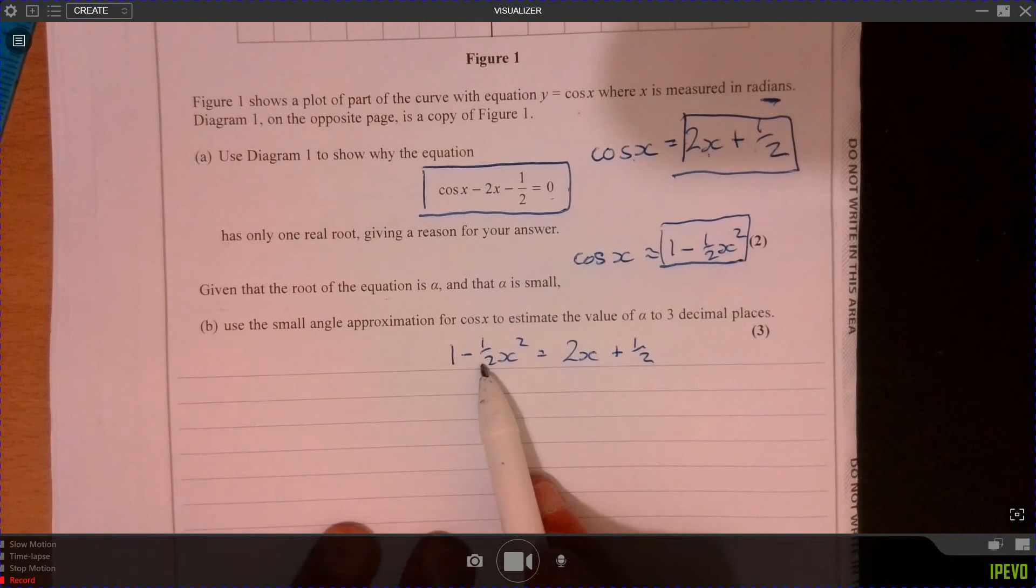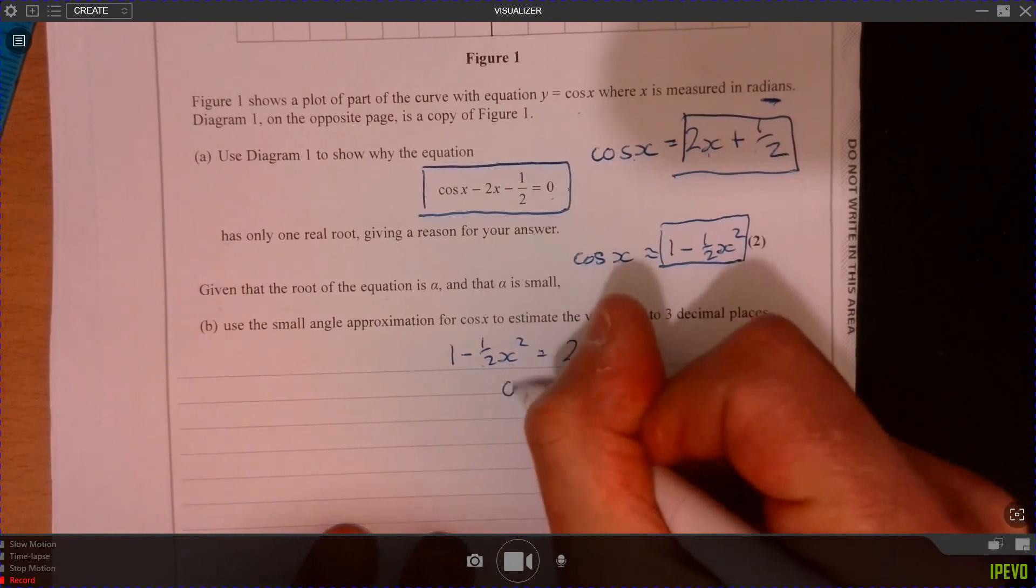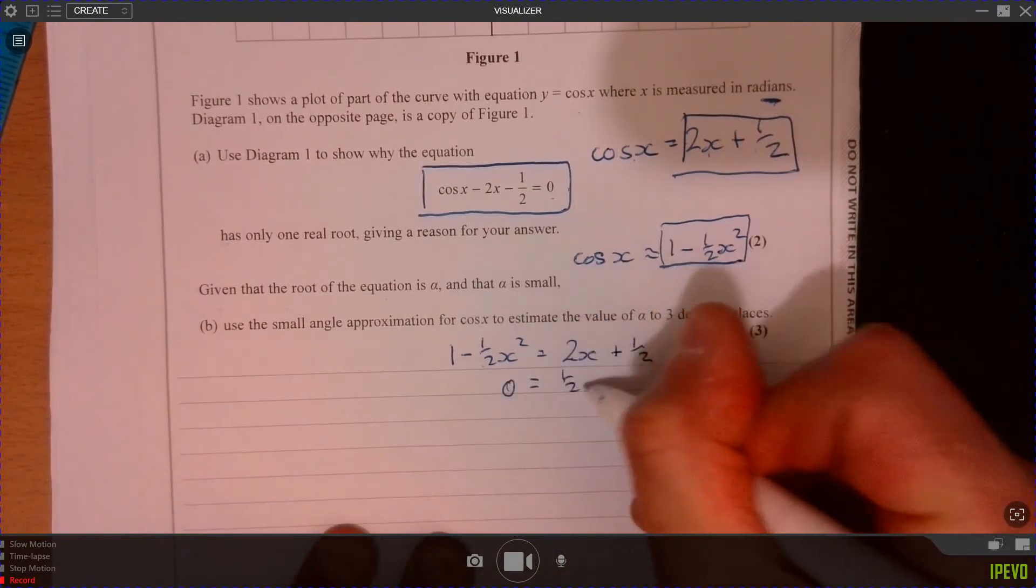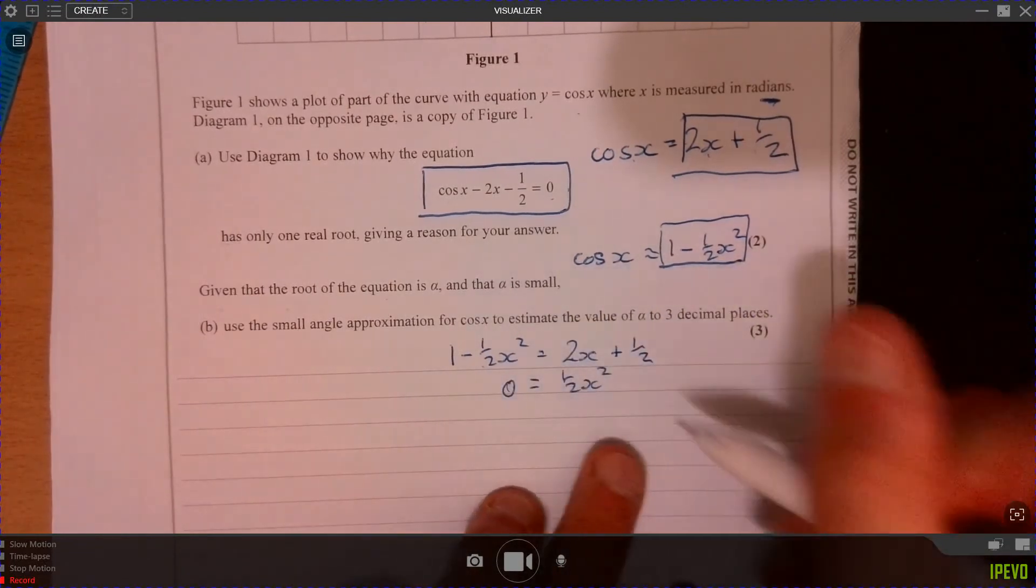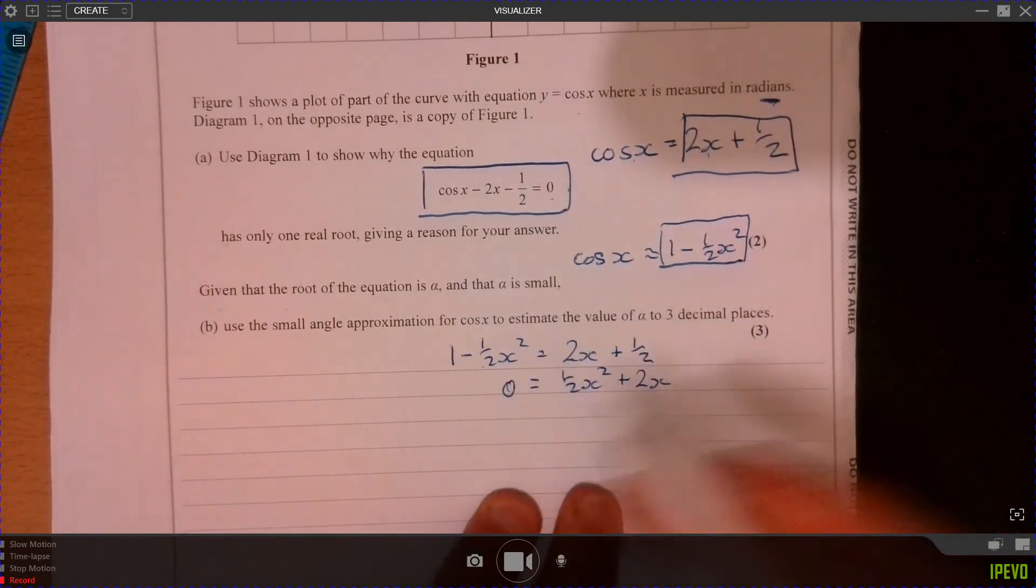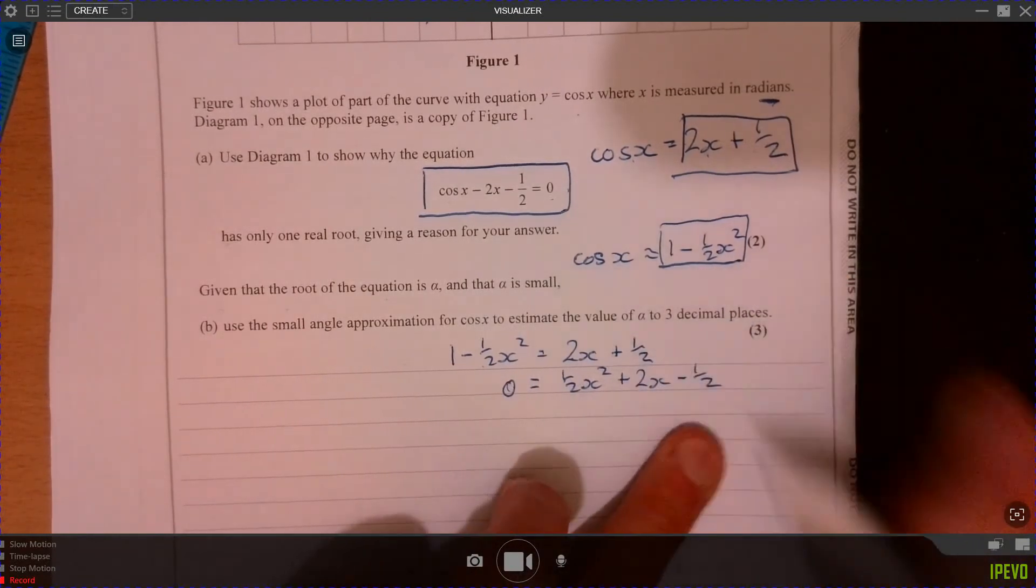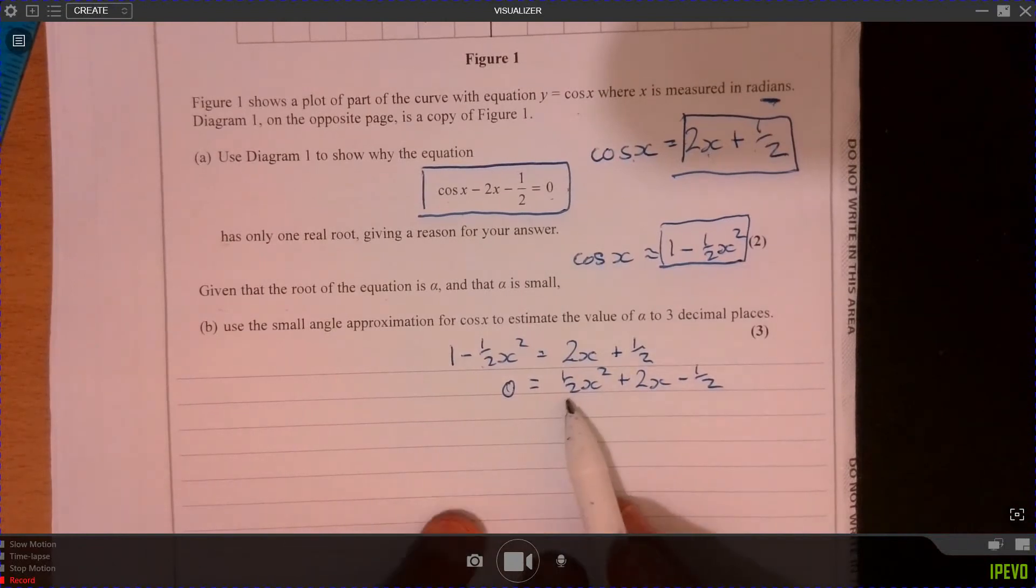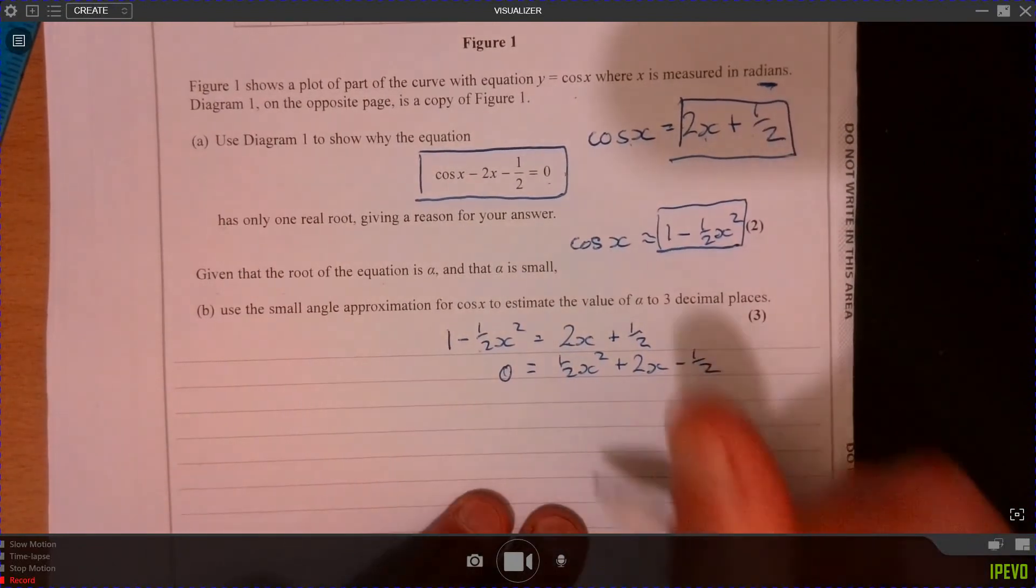Don't know about you - I'm going to add half x squared to both sides and I'll take away the 1. So that gives us half x squared, and then we're going to have plus 2x. Half take away 1 is minus a half. Make life a little bit easier for yourself. Multiply everything by 2.